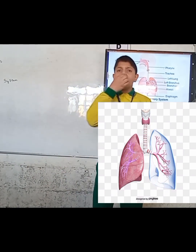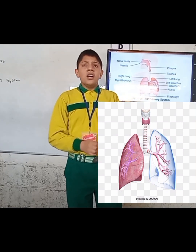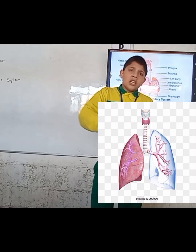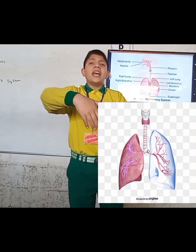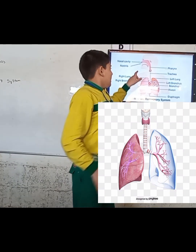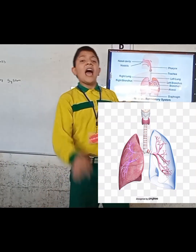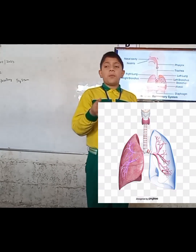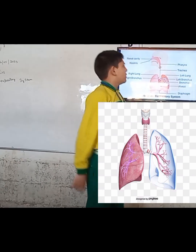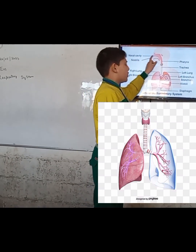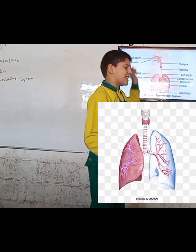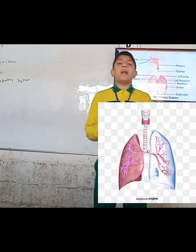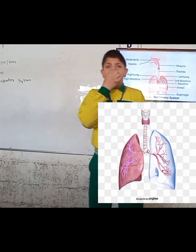First of all, nostrils. Nostrils are the first part — the first step occurs here when we inhale air. The nostrils filter out dust particles. After the nostrils, there is the nasal cavity, which has mucus present that moistens the air.